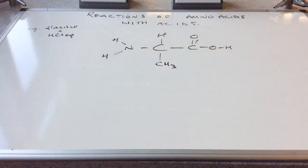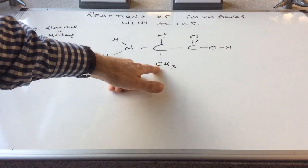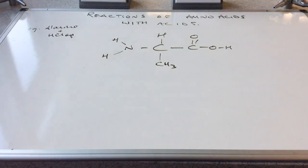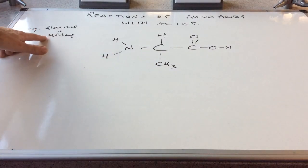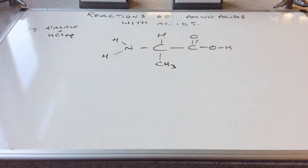So we'll do a specific example now. The amino acid on the board is alanine so all I've done is I've changed the R group to CH3. So this is alanine and you can see I've written up there alanine plus hydrochloric acid. So if you want to have a think about what the product of that reaction would look like.